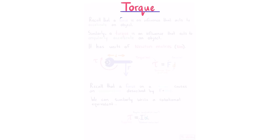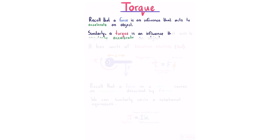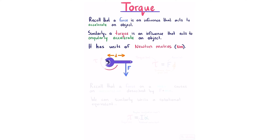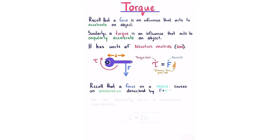Torque. A force is an influence that acts to accelerate an object. Similarly, a torque is an influence that acts to angularly accelerate an object, with units of newton meters. The torque produced by a force on a wrench at a particular distance equals force times distance. The rotational equivalent of F equals ma is: torque equals rotational inertia times angular acceleration.